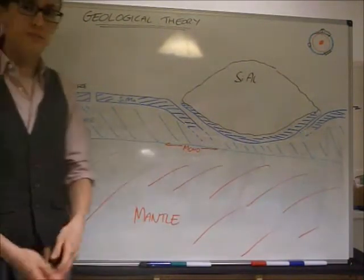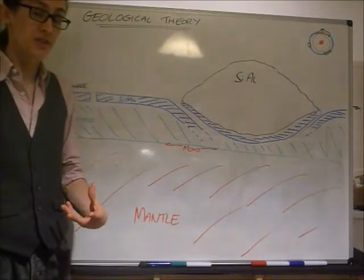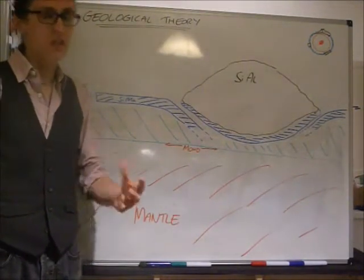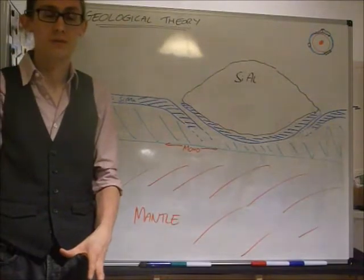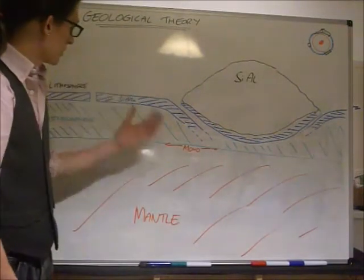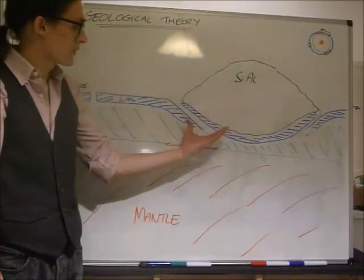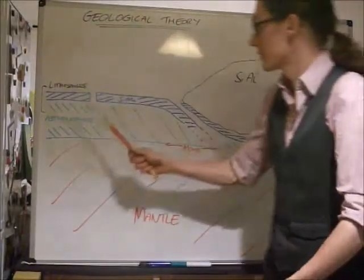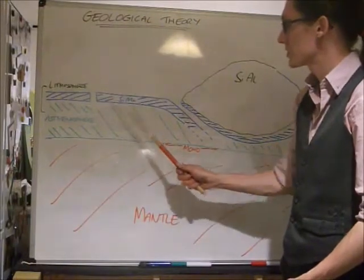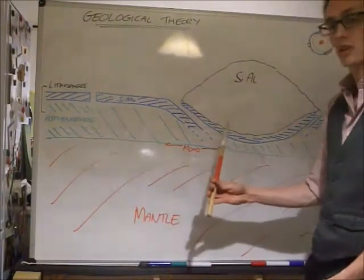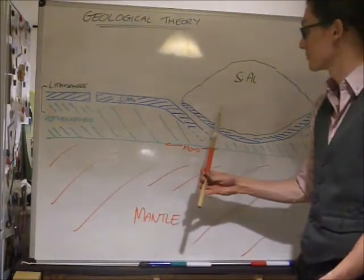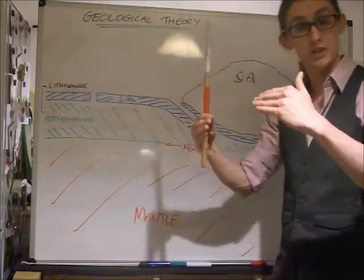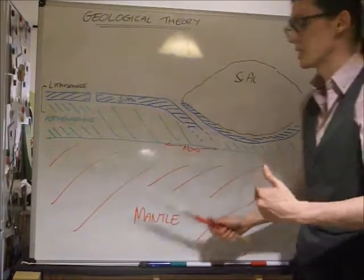The asthenosphere is kind of the consistency of tuna mayonnaise. It's not quite solid, it's not quite liquid. The asthenosphere holds the lithospheric plates. So, the oceanic plates, part of the lithosphere, as are the continental plates. All of that's the lithosphere. It sits in the asthenosphere, which kind of supports it, and beneath that's the mantle.